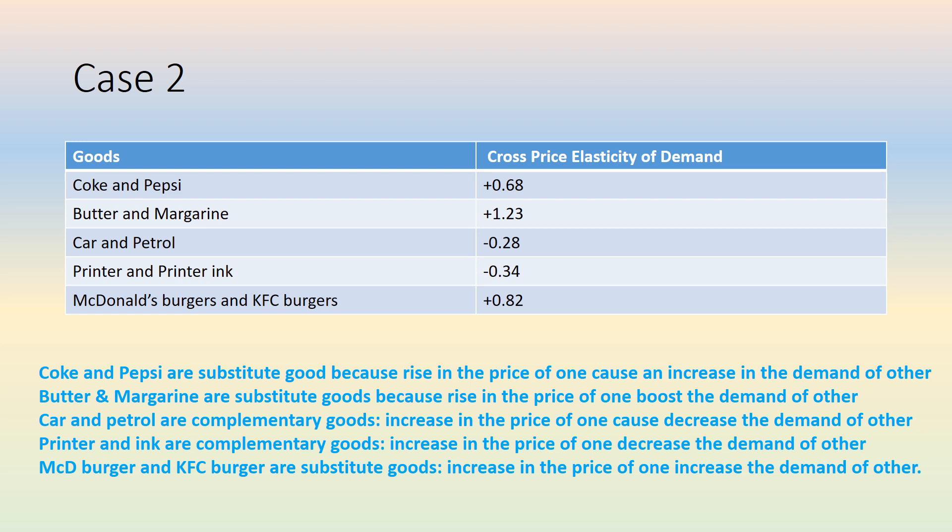In the above example, we are not finding elasticity or inelasticity. The assignment asks us to find which type of relationship exists. Coke and Pepsi are substitute goods. The second example, butter and margarine, are also substitute goods. If the price of butter goes up, there will be an increase in demand for margarine. Look at the positive figure: +1.23.